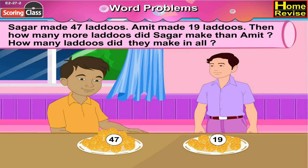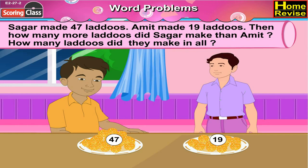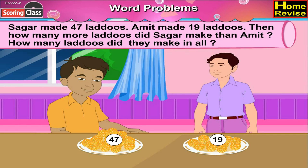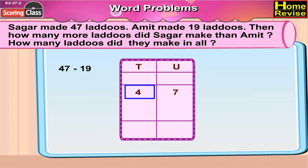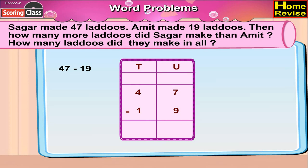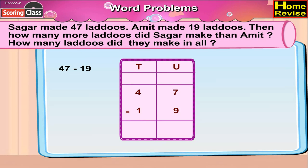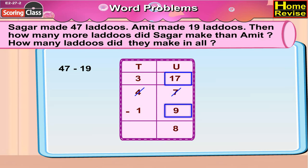Sagar made 47 laddus and Amit made 19 laddus. In order to find how many more laddus Sagar made than Amit, we subtract 19 from 47. That is 4 tens 7 units minus 1 ten 9 units. 9 cannot be subtracted from 7, so we untie 1 ten from 4 tens. Now 4 tens 7 units becomes 3 tens 17 units. 17 minus 9 is 8.